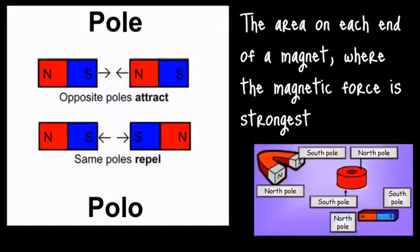Last, we have the vocabulary word pole. A pole is the area on each end of a magnet, where the magnetic force is strongest.